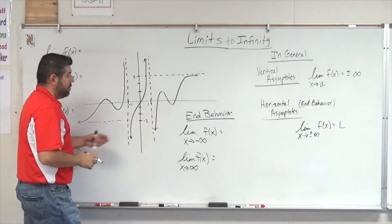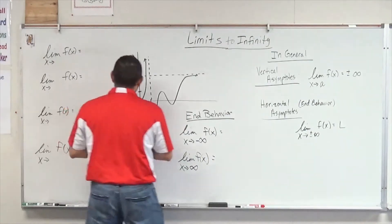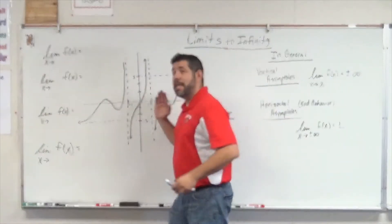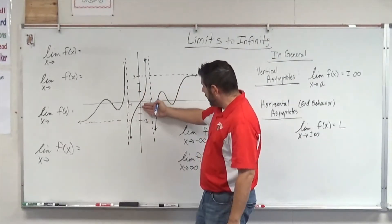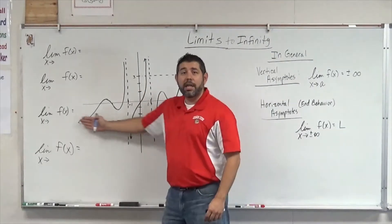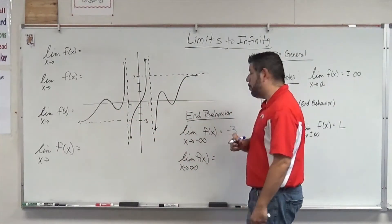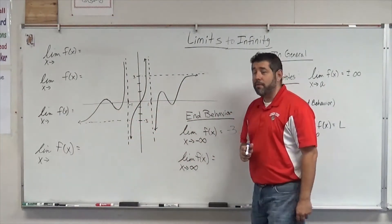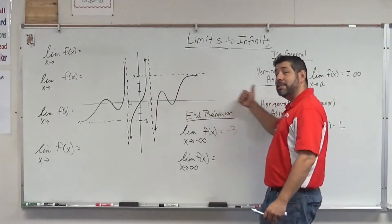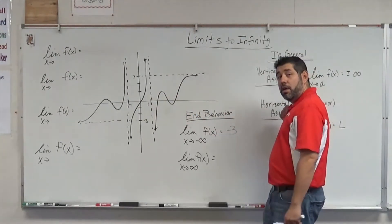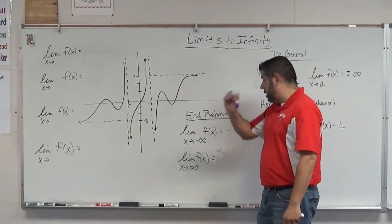The limit as x approaches negative infinity — as x goes out to negative infinity, y is going to the horizontal asymptote at negative 3. So there's the first part of my end behavior. The second part: as x goes to positive infinity, y approaches positive 3.